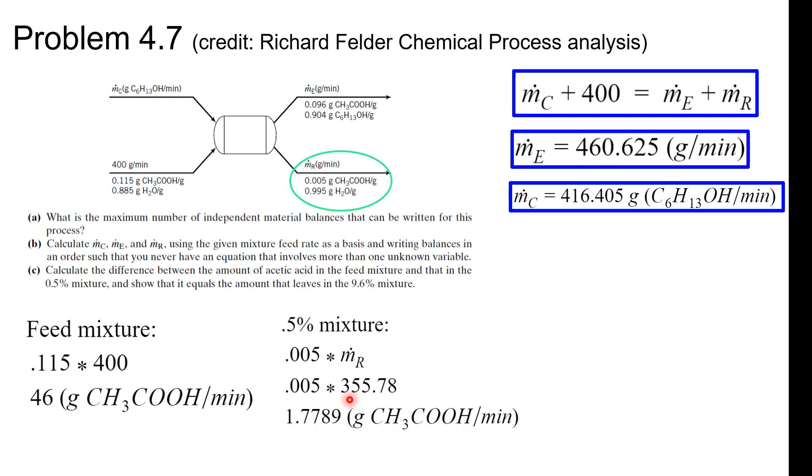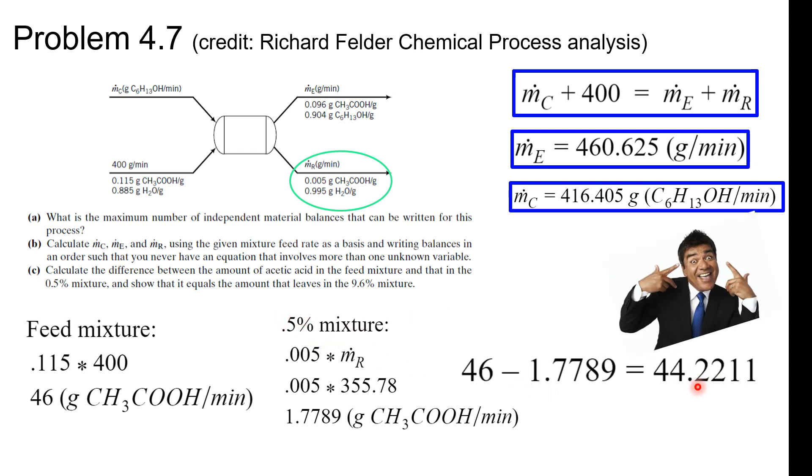Multiply those together and that gives us about 2 grams per minute. So the difference that it's asking for is gonna be 46 minus 2, should be about 44. What's up George. And that's pretty much it honestly for this problem.